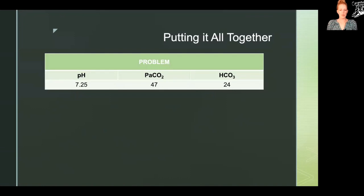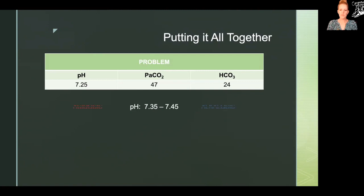Now let's actually solve a problem. We start with pH, as this gives us a broad overview of what's happening in our body. The value here is 7.25 — our normal was 7.35 to 7.45, so it's a little less than normal, and that trends toward acidosis. So we know that we have some sort of acidosis going on, and we're about to figure out if it's respiratory or metabolic.